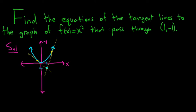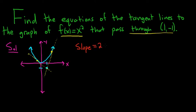So we have two tangent lines and we have to find them — tangent lines to the graph of this function that pass through 1, negative 1. We know that the slope of the tangent line is the derivative. So we know that the slope is going to be 2x, because the derivative of x squared is 2x.